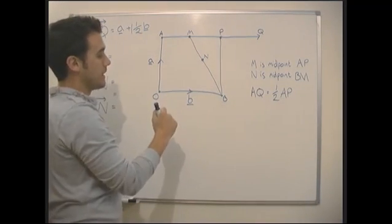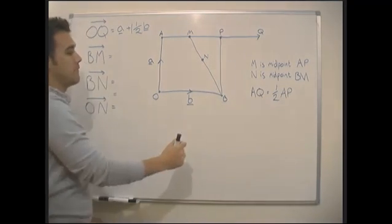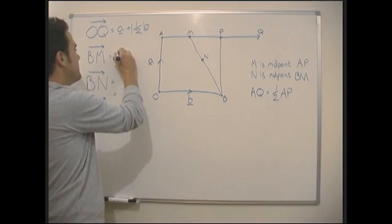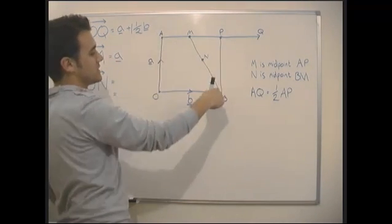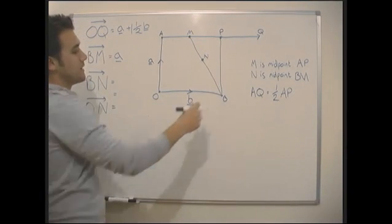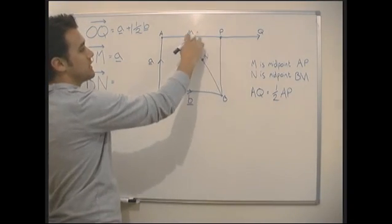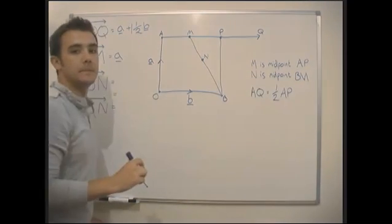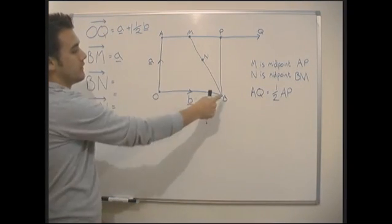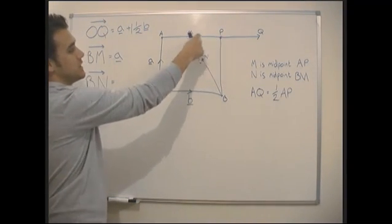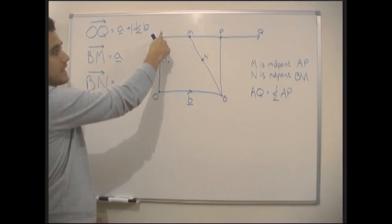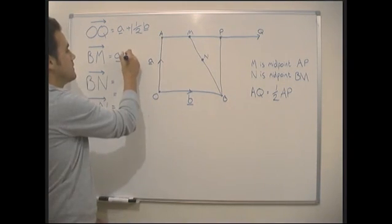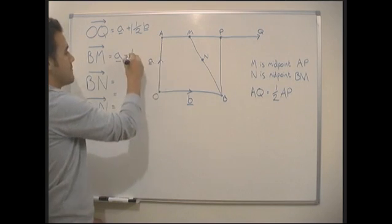Now we need to get from B to M. First thing, we're going to go up a — these sides are the same so we go up a again. Now we need to get from P to M, and we're told that M is the midpoint of AP, so it's halfway along. The vector we need would go minus b to get to A, so we need to go minus a half b to get to M.